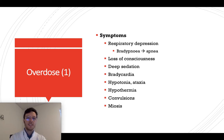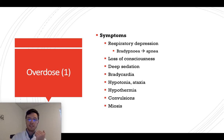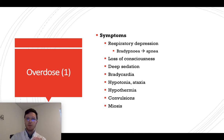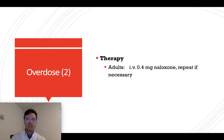When someone takes too much fentanyl, it can lead to an overdose with symptoms including respiratory depression starting with bradypnea and potentially leading to apnea and coma, loss of consciousness, deep sedation, bradycardia, hypotonia, ataxia, hypothermia, convulsions, and meiosis. The treatment is intravenous naloxone at 0.4 mg, which can be repeated within 2 to 3 minutes if there is no effect.